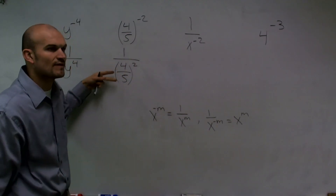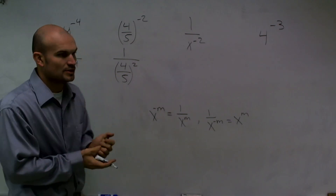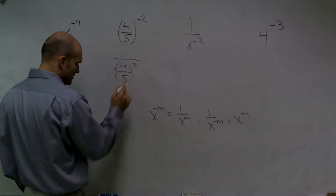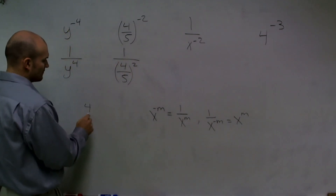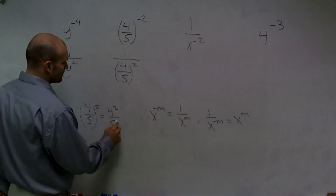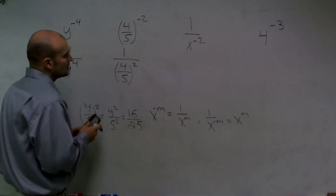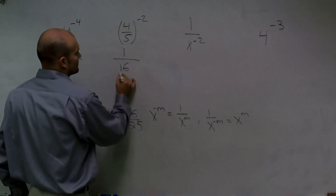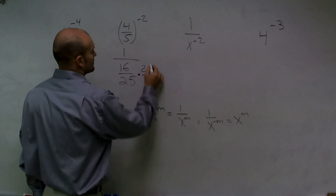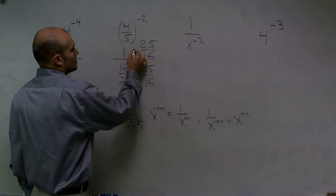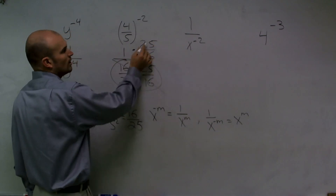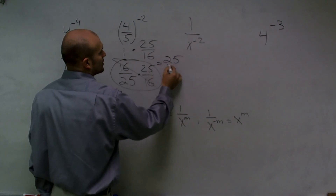There's a complication because now we have a fraction in the denominator. We can't leave a fraction in the denominator. First, I'll evaluate: 4 over 5 squared equals 4 squared over 5 squared, which equals 16 over 25. Now, rewriting our answer as 1 over 16 over 25, I multiply by the reciprocal. The fraction times its reciprocal cancels to 1, leaving a final answer of 25 over 16.